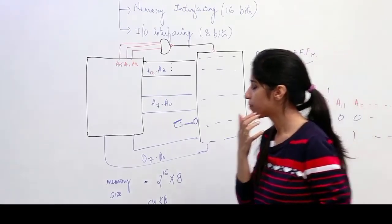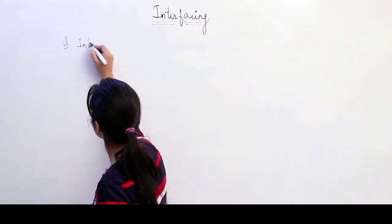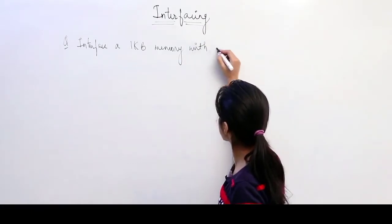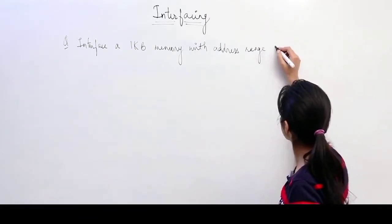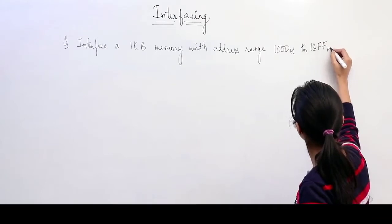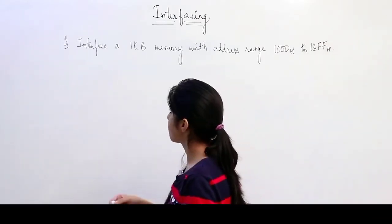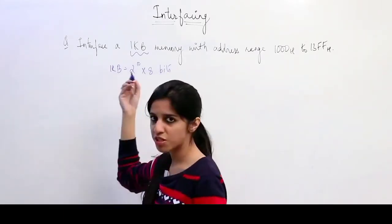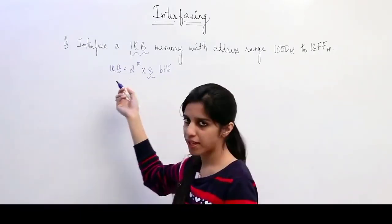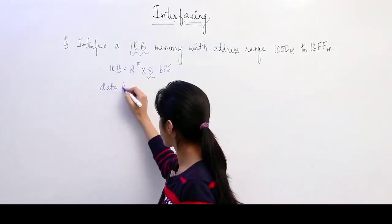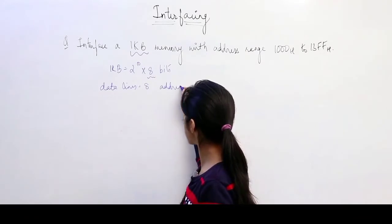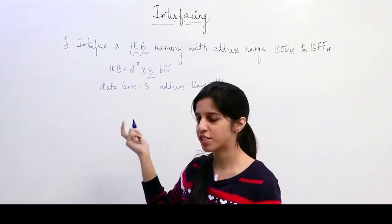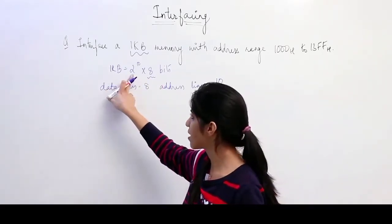Now we are going to look at a question. Interface a 1 KB memory with a given address range. First look at the size of memory: 1 KB is 2^10 × 8 bits, which means there are going to be 8 data lines. We have 10 address lines available, meaning each memory location has a 10-bit long address. Now what do we do with the 6 remaining address lines?